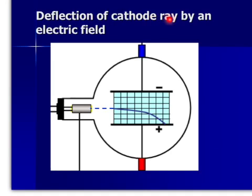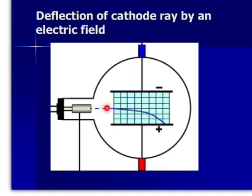Deflection of cathode ray, or electron beam, by an electric field. An electric field is set up between two metal plates connected to a power supply, such that the top plate is negative and the bottom plate is positive. The cathode ray — electrons being negative — will be drawn toward the positive plate and repelled by the negative plate.